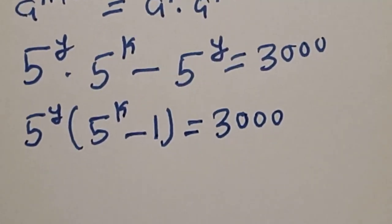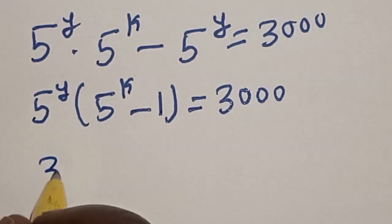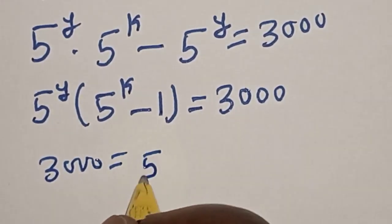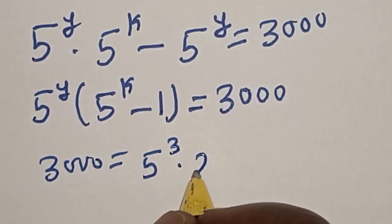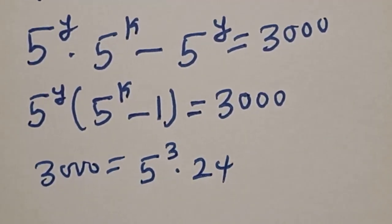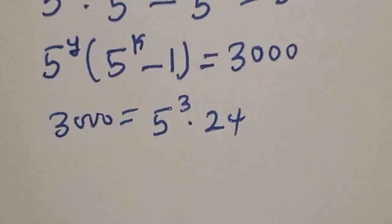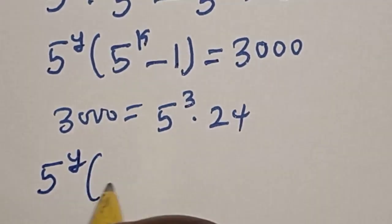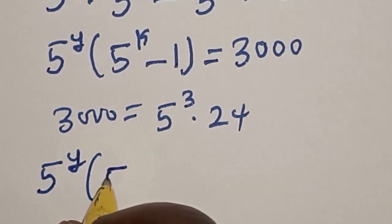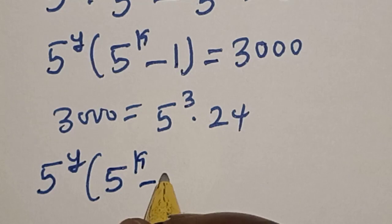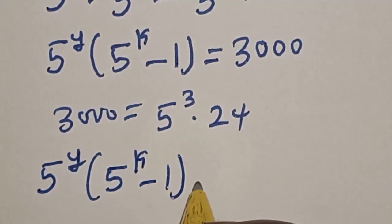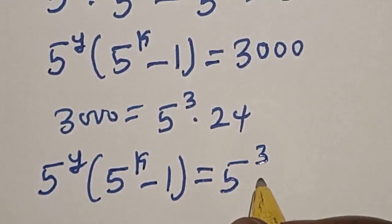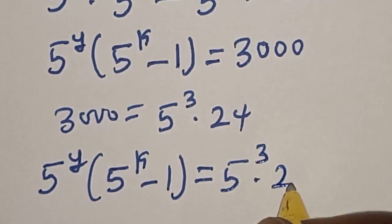Now, 3000 equals 5 raised to power 3 multiplied by 24. So this becomes: 5 raised to power y multiplied by 5 raised to power k minus 1, equal to 5 raised to power 3 multiplied by 24.